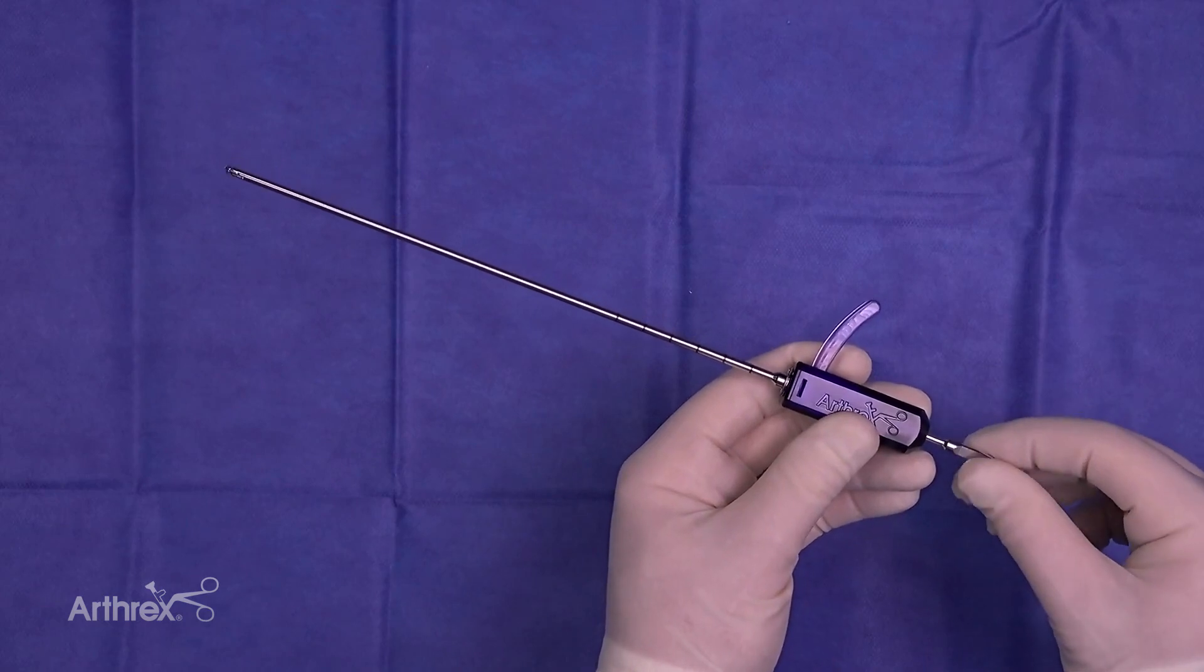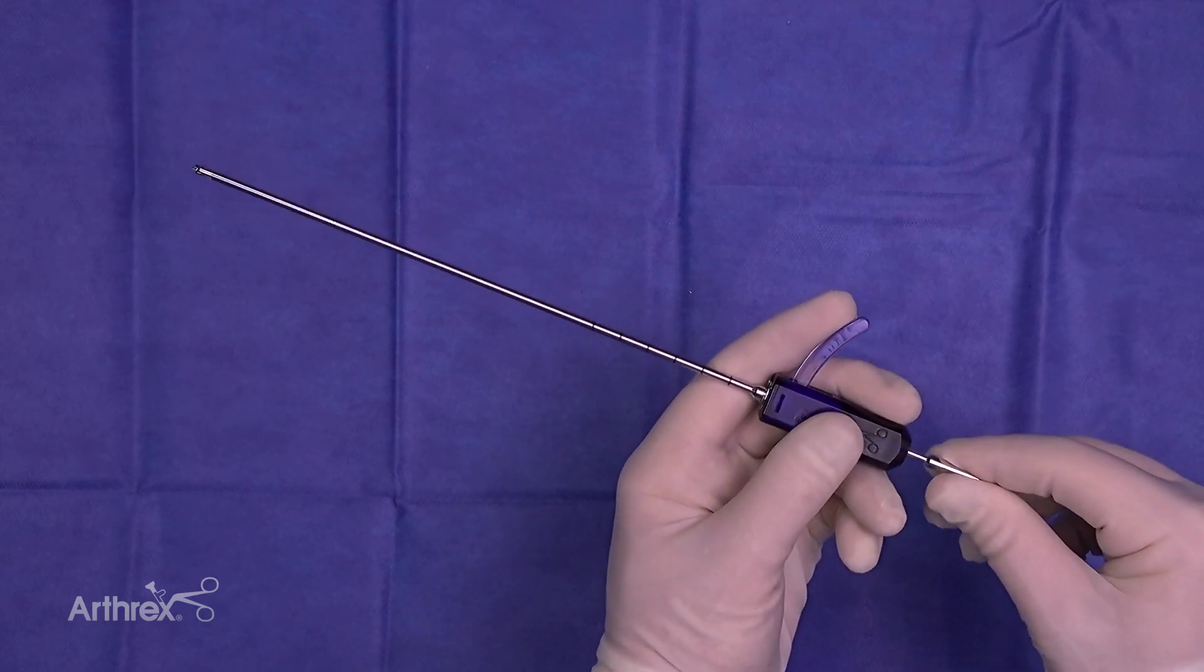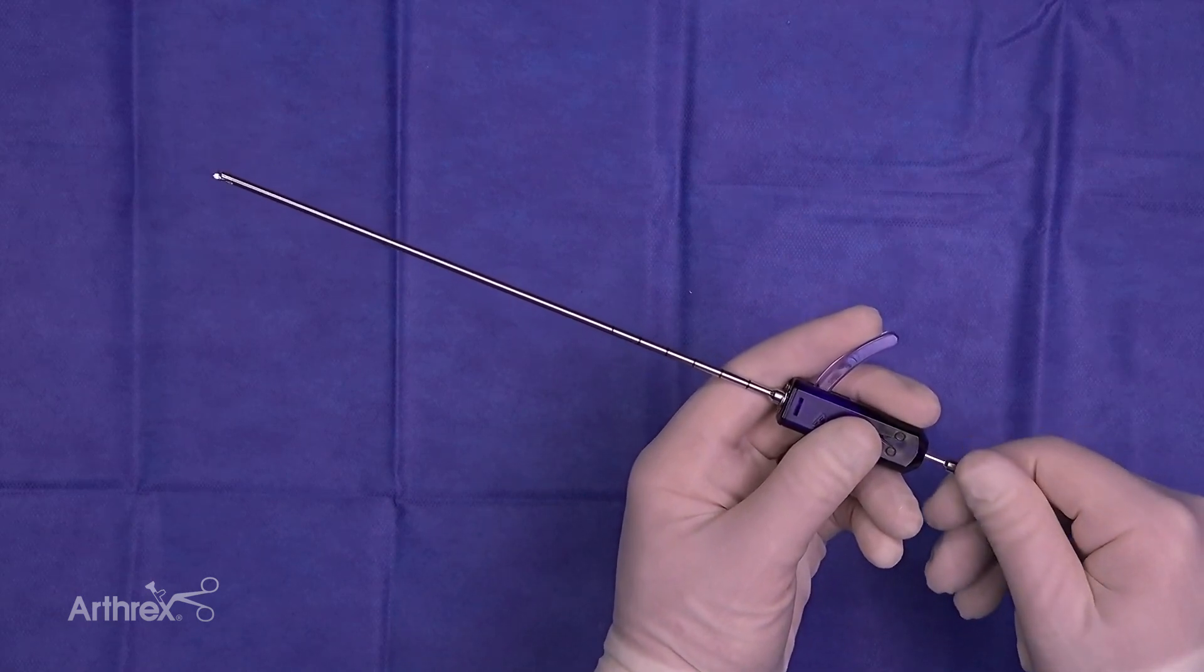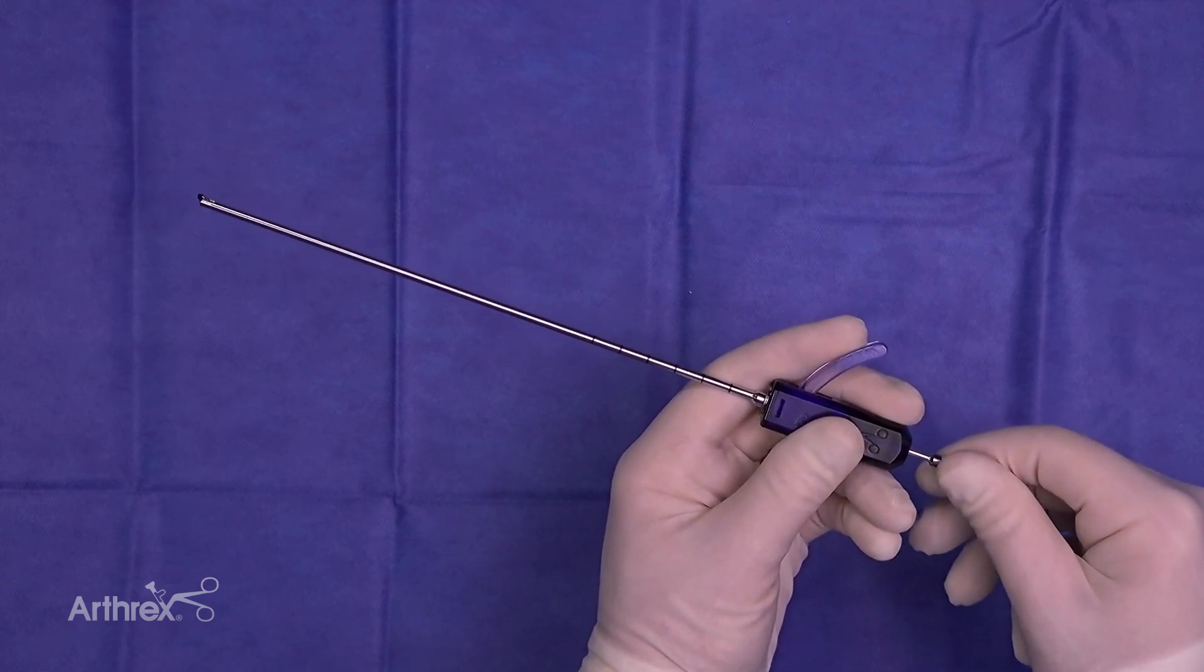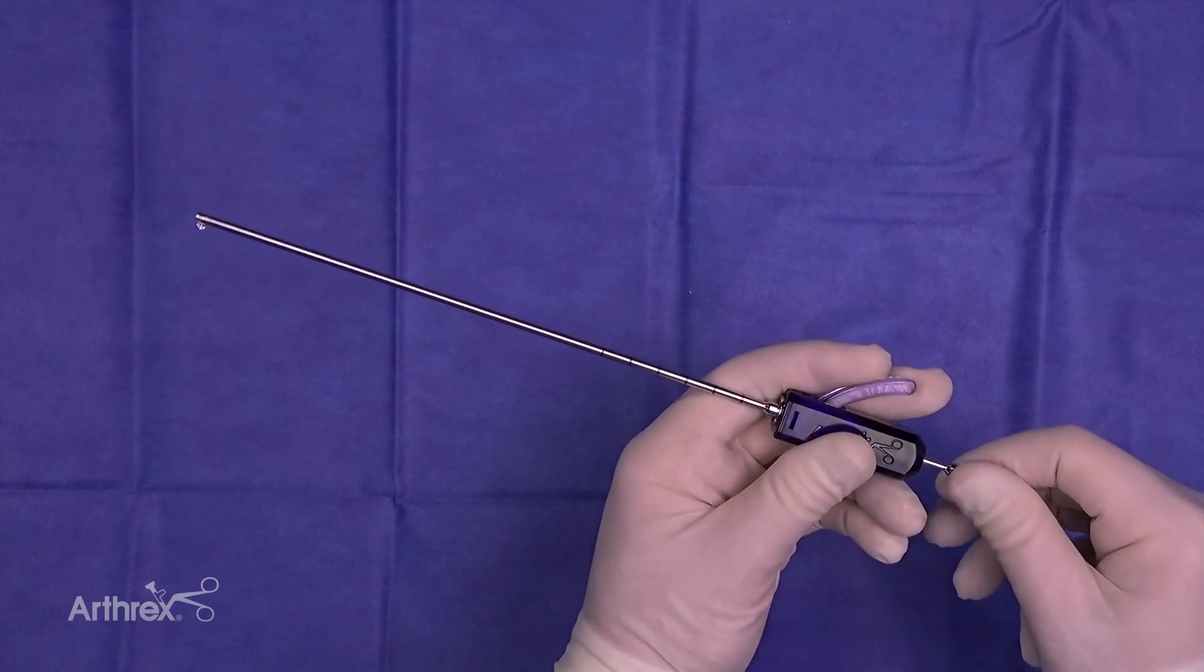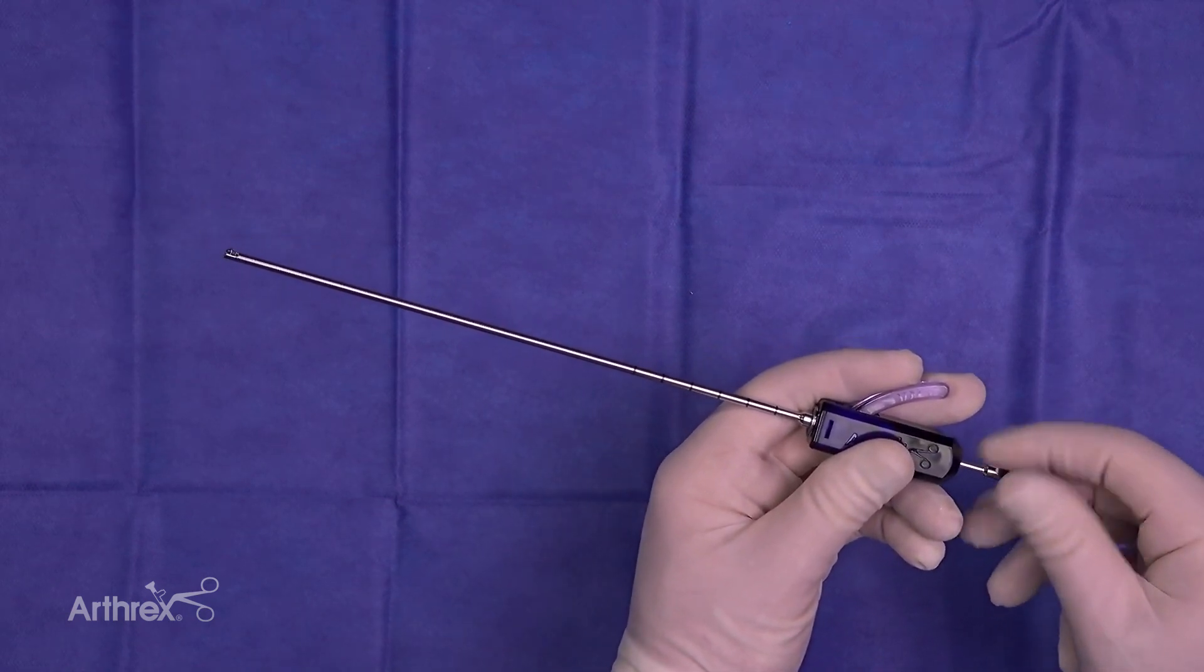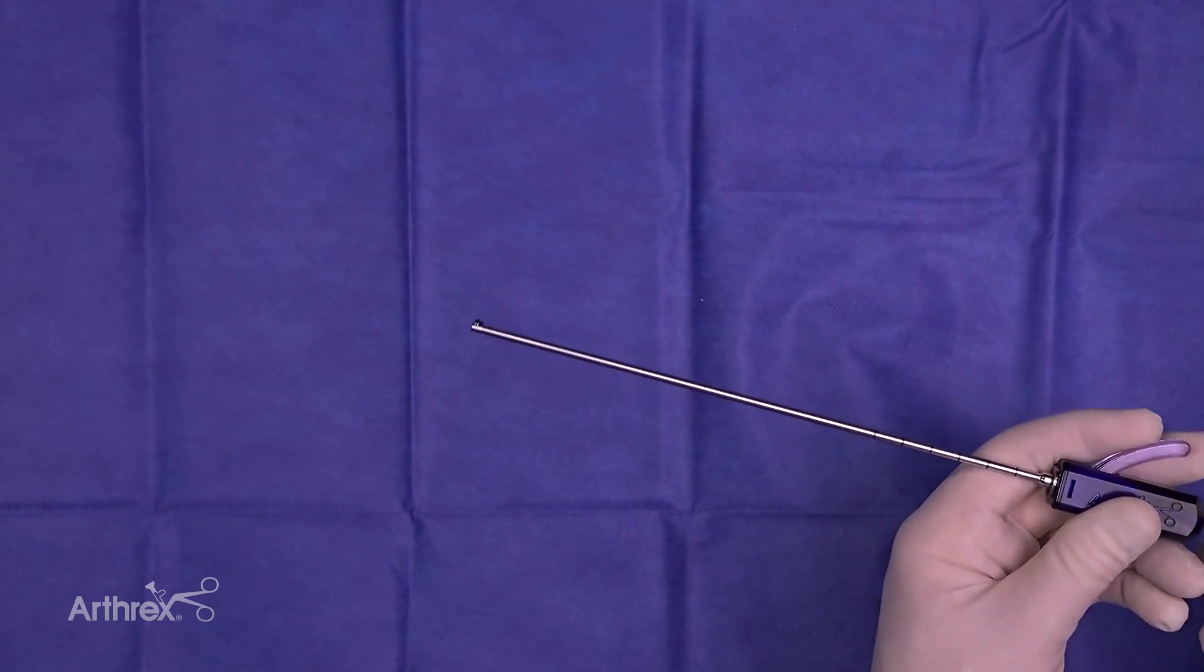And the way this would work is that you could be drilling inside the knee and while it's drilling, you can then open up the flip cutter end while you're spinning to gradually remove bone up to a seven millimeter decompression. And then once you've got this opened up, you can keep spinning and then you can start pulling back and you can perform your decompression.